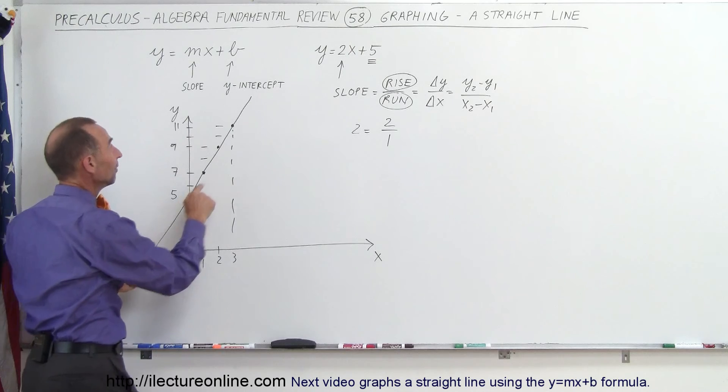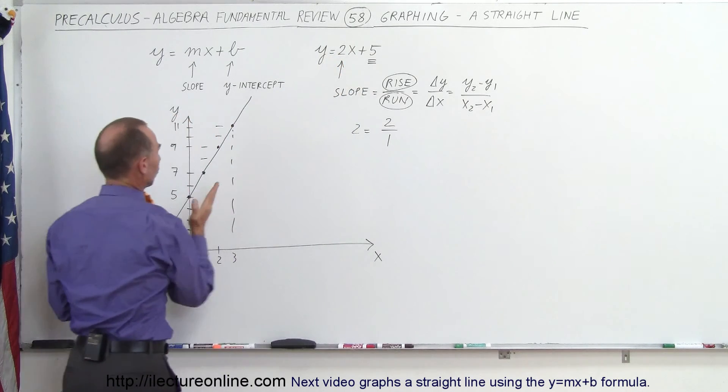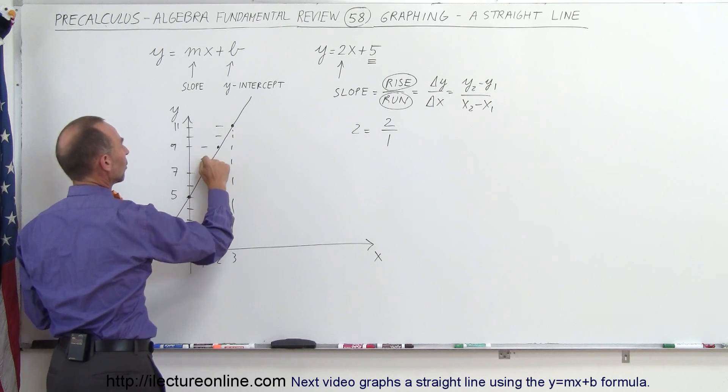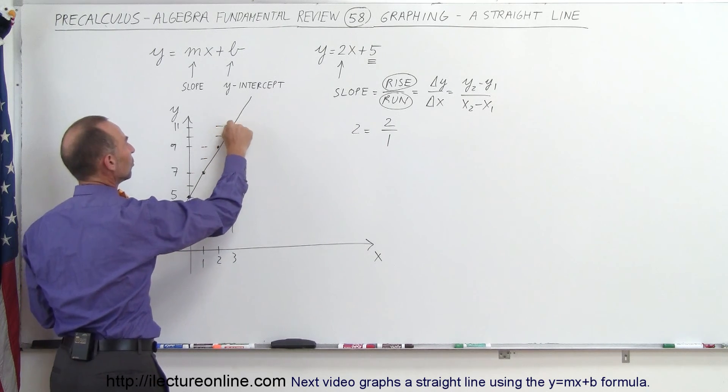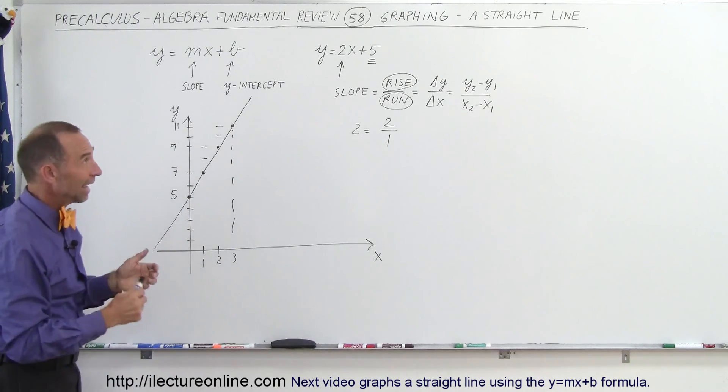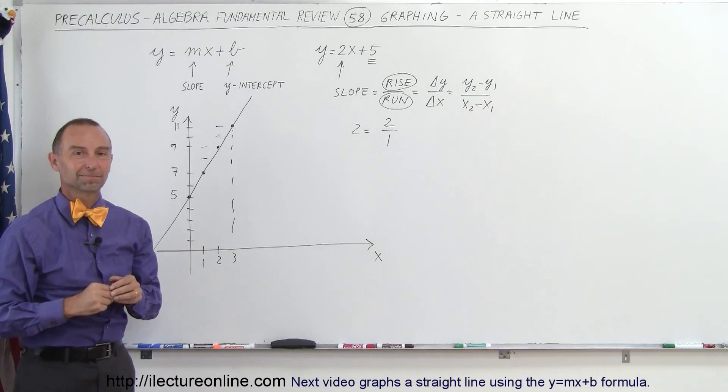Again, 5 is the y-intercept, 2 is the slope, the steepness of the line. We rise two, run 1, rise two, run 1, rise two, run 1, connect those dots, and you have the line. And that's how we graph a straight line.